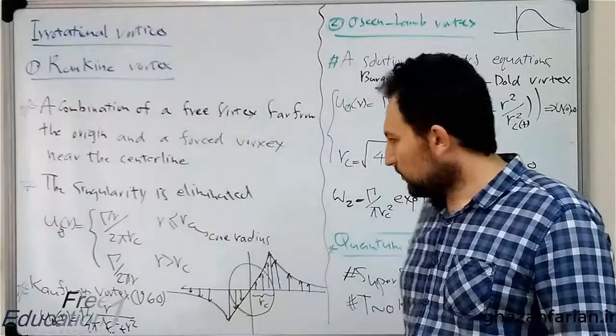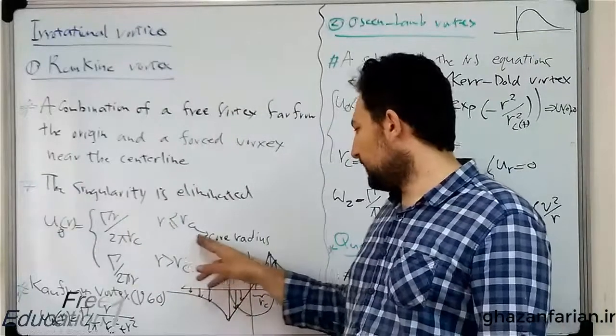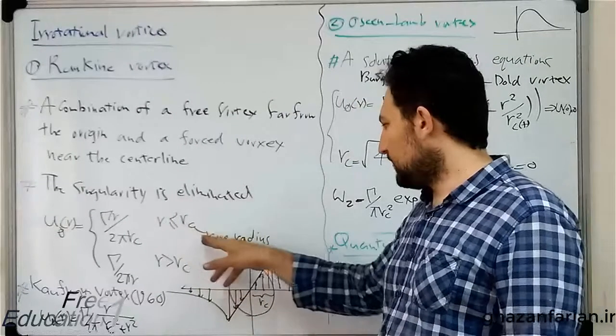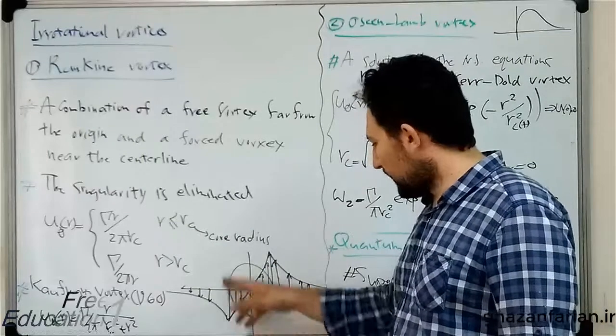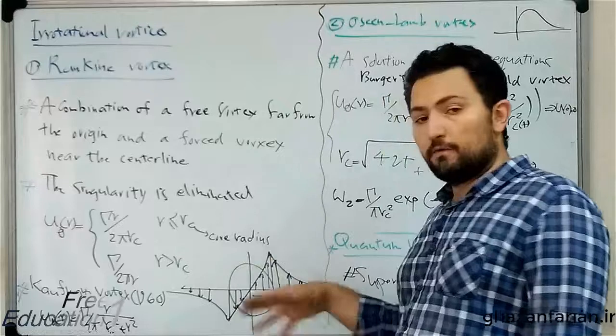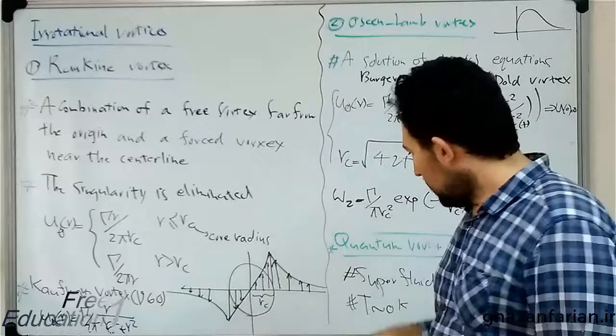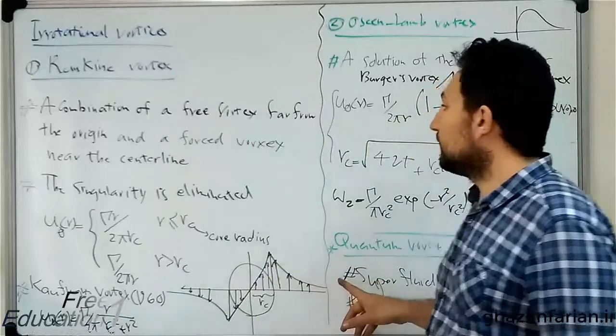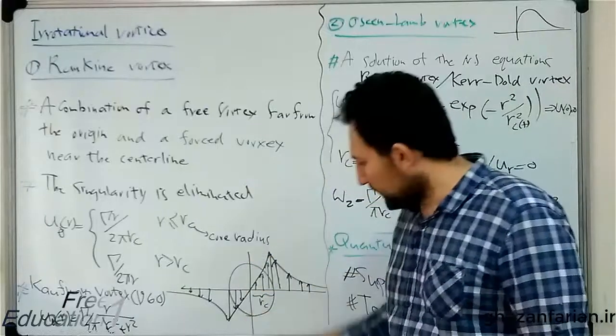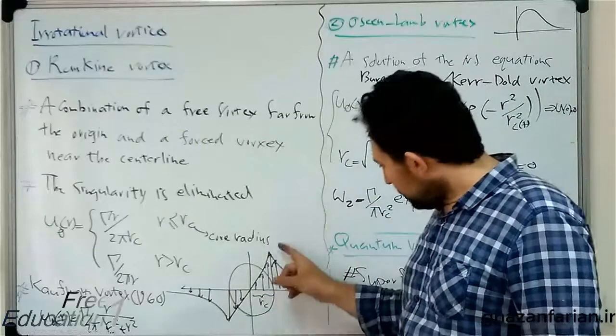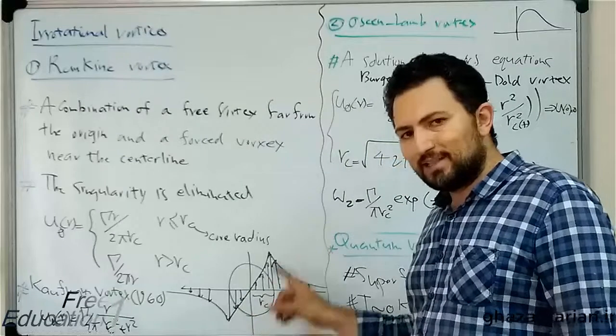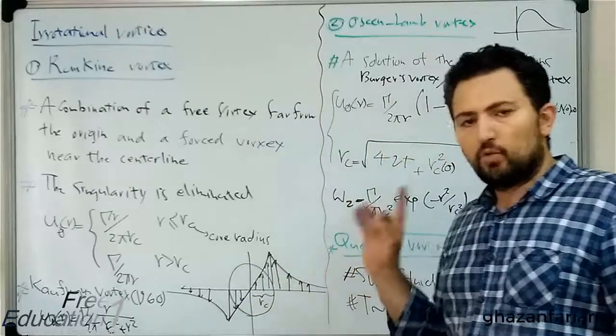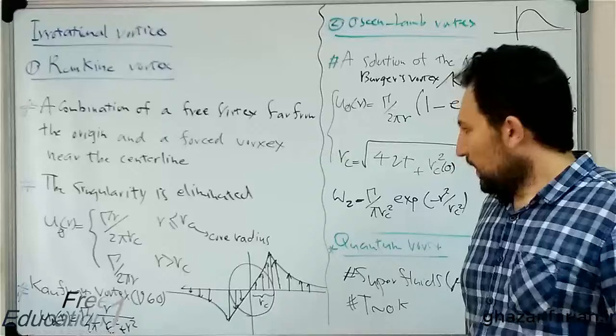This is the mathematical model. R sub c is the core radius. Out of this core region, the flow is free vortex. And inside the core region, the velocity distribution is linear, which is exactly the forced vortex distribution.